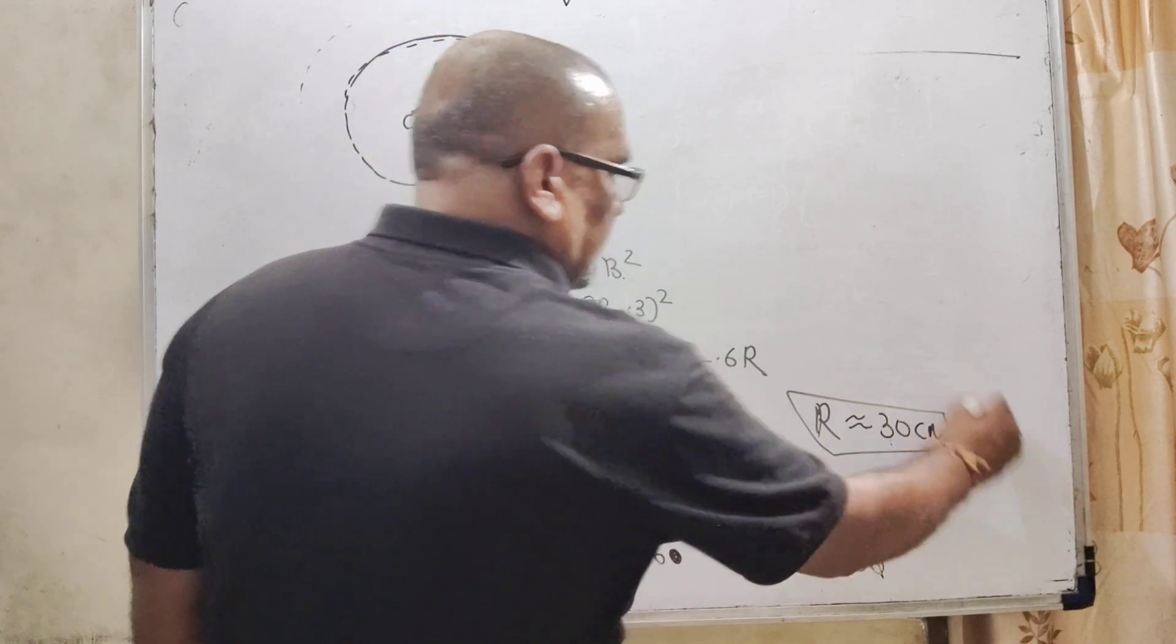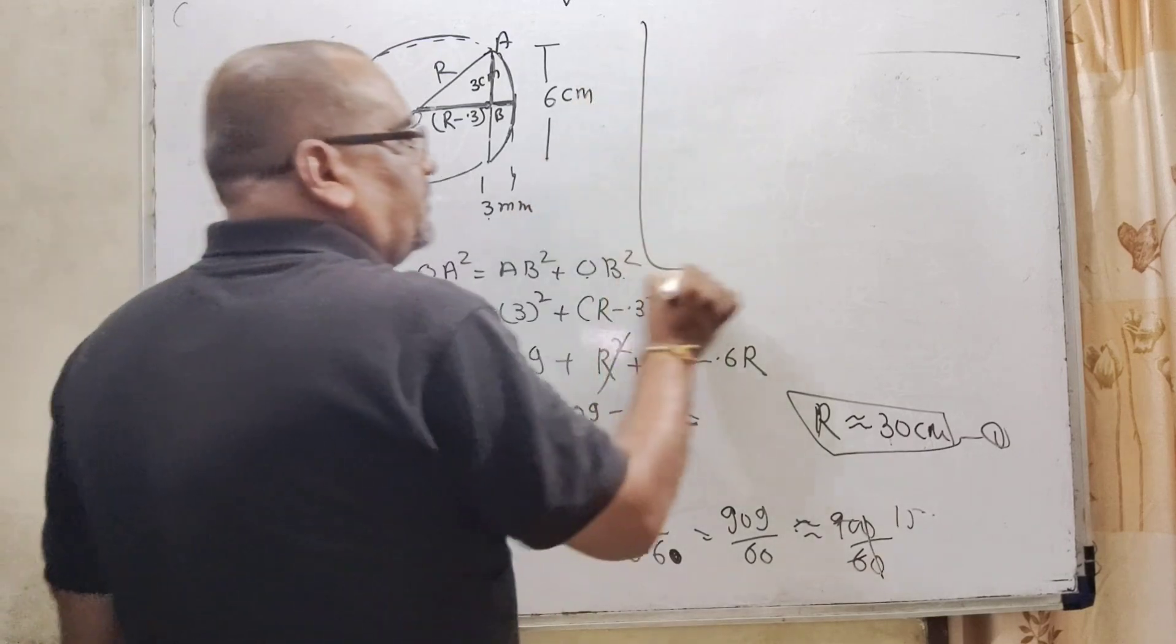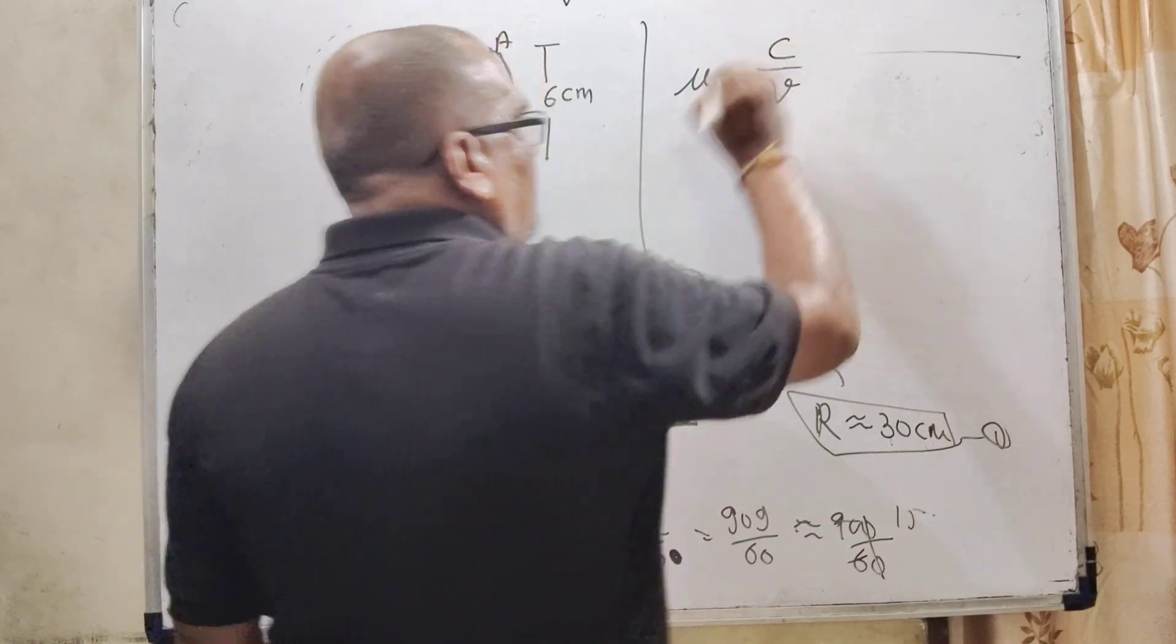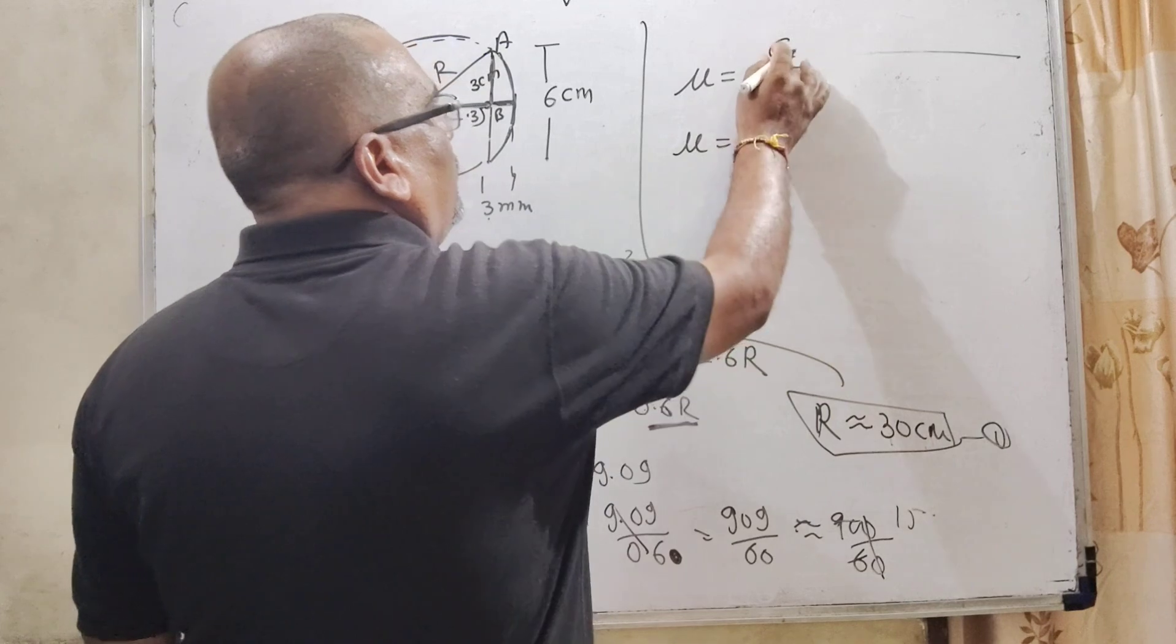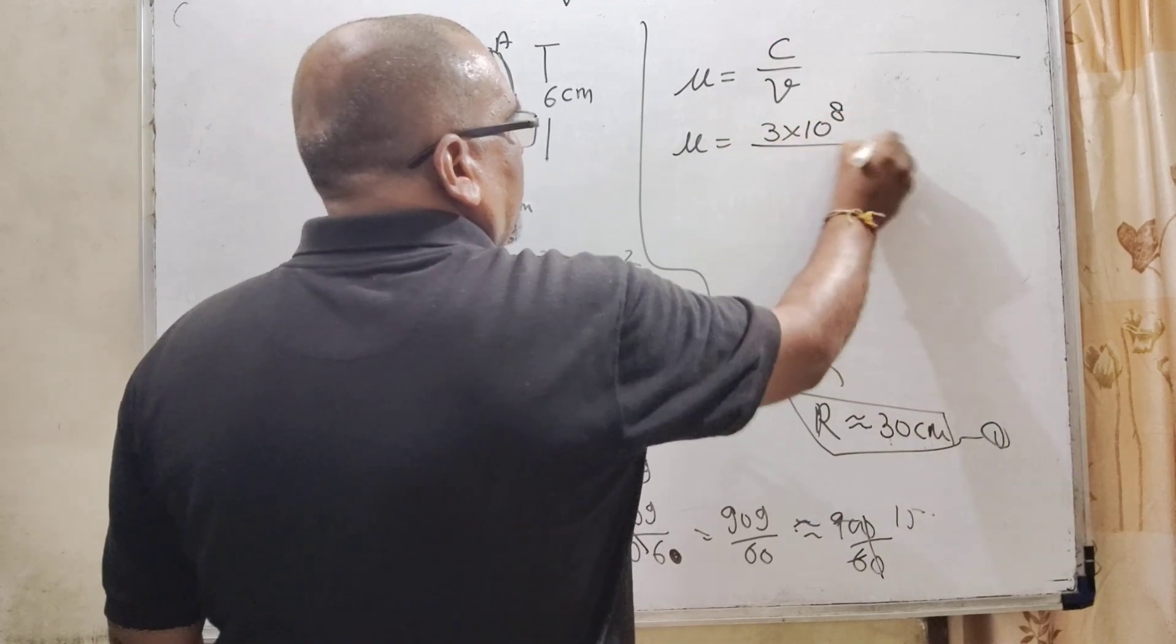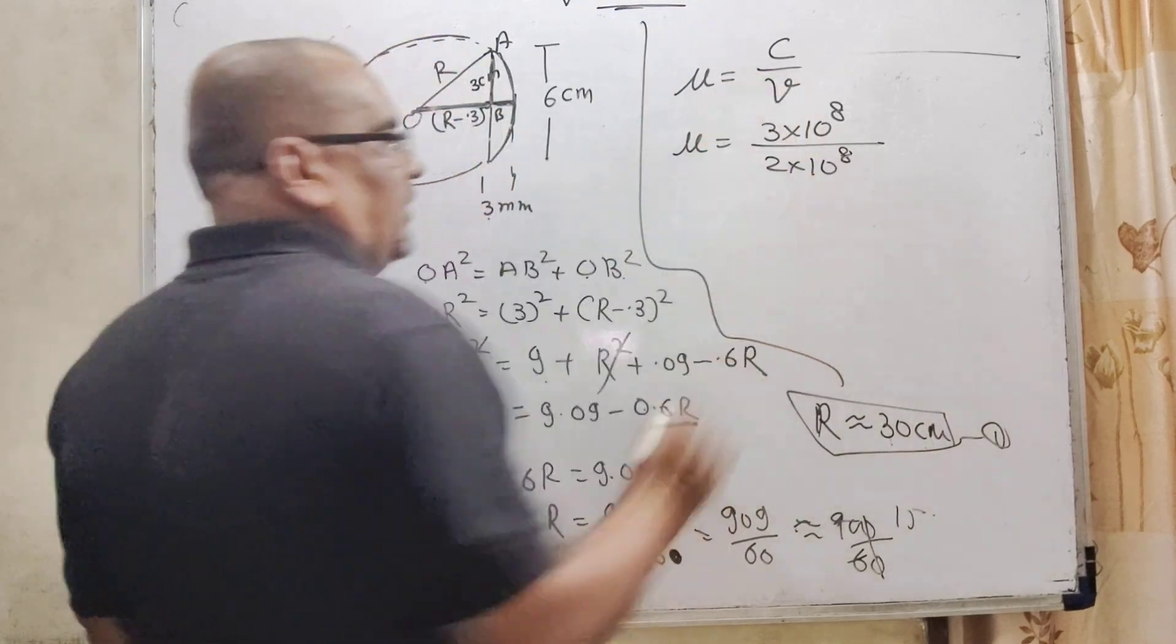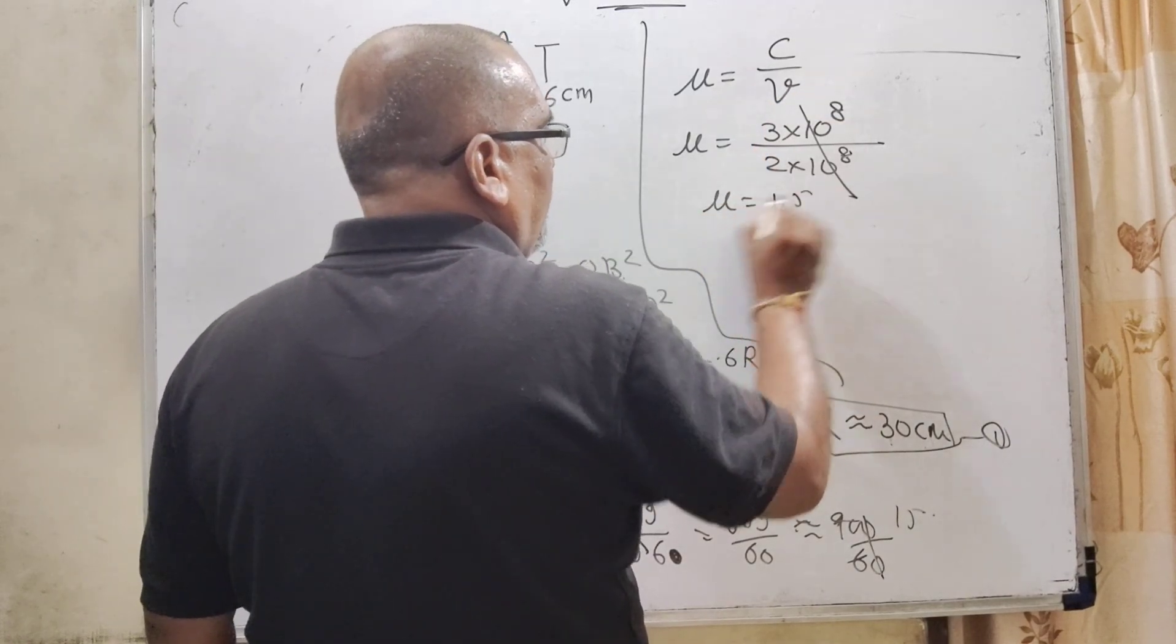This is our first result. For the μ, as we know that μ = speed of light in air ÷ speed of light in medium. So, μ = 3 × 10^8 ÷ 2 × 10^8. 10^8 cancels out. Then μ = 1.5.